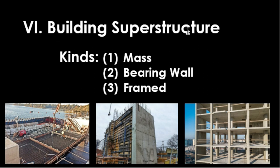Building the superstructure: we have three kinds. Mass structures are made of large bodies of materials covering large areas, such as earth or concrete dams and cast-in-place concrete retaining walls; they may have little or no open space inside. Bearing wall structures are made of masonry or other materials, built as walls or walls and roofs, usually thick and made of load-bearing blocks.